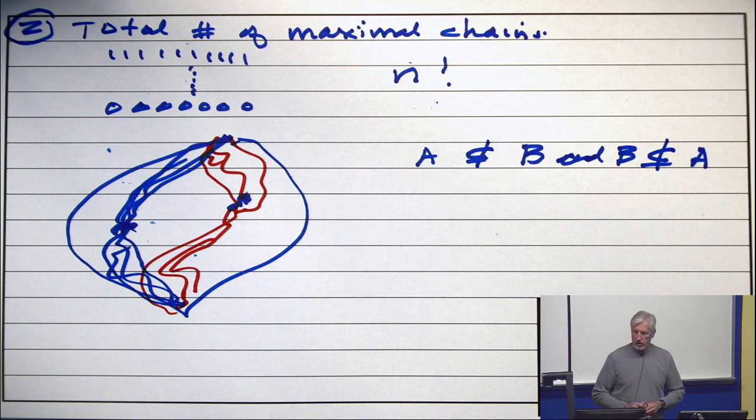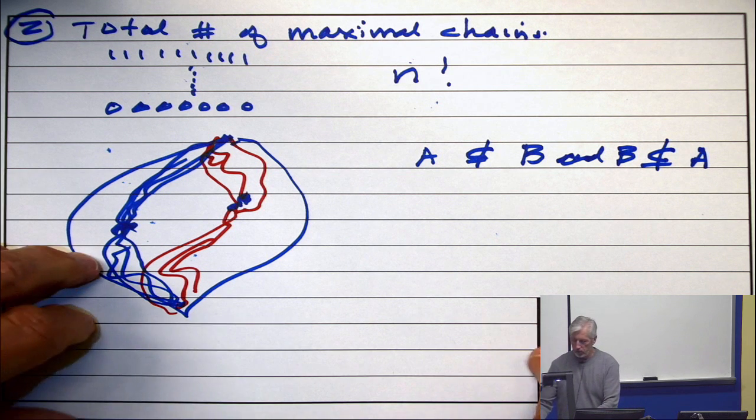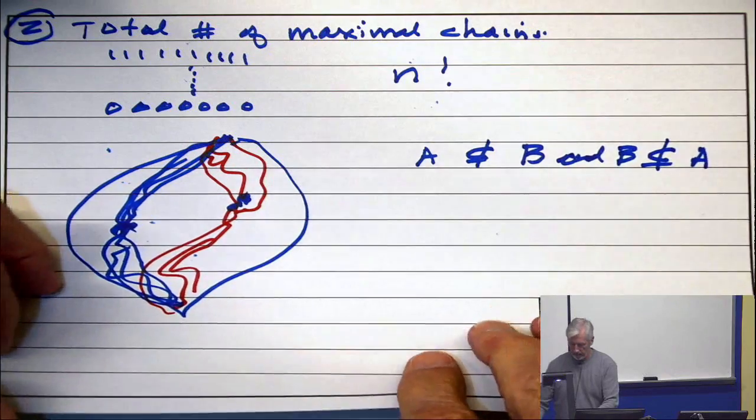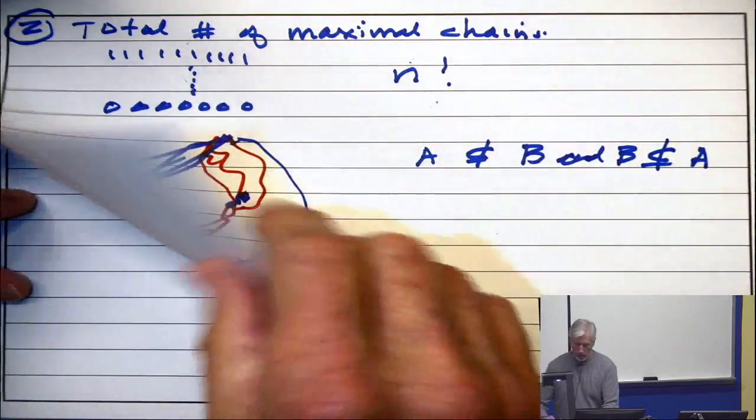All right. That's detail two. We're going to put this together, and now we're going to show that the width is the size of the largest binomial coefficient.